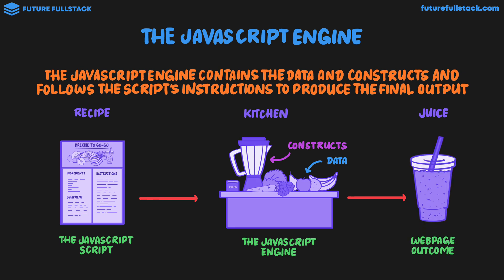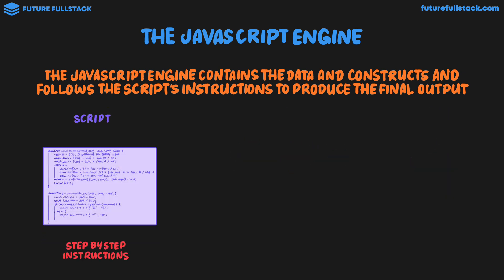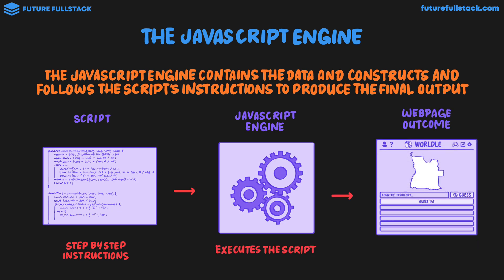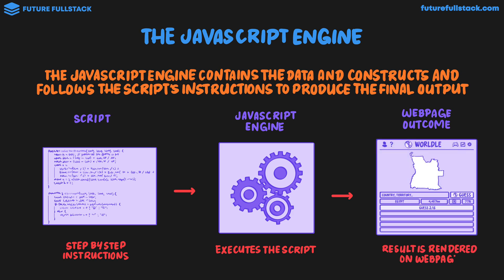Looking now just in JavaScript terms, we have our script — which are step-by-step instructions and contain the data and constructs we need to produce the final outcome. The script is executed inside the JavaScript engine, which is inside the browser. It's something behind the scenes you can't see. The JavaScript engine executes the script, and this produces the final webpage outcome, where we guess a country and the result is rendered on the webpage.